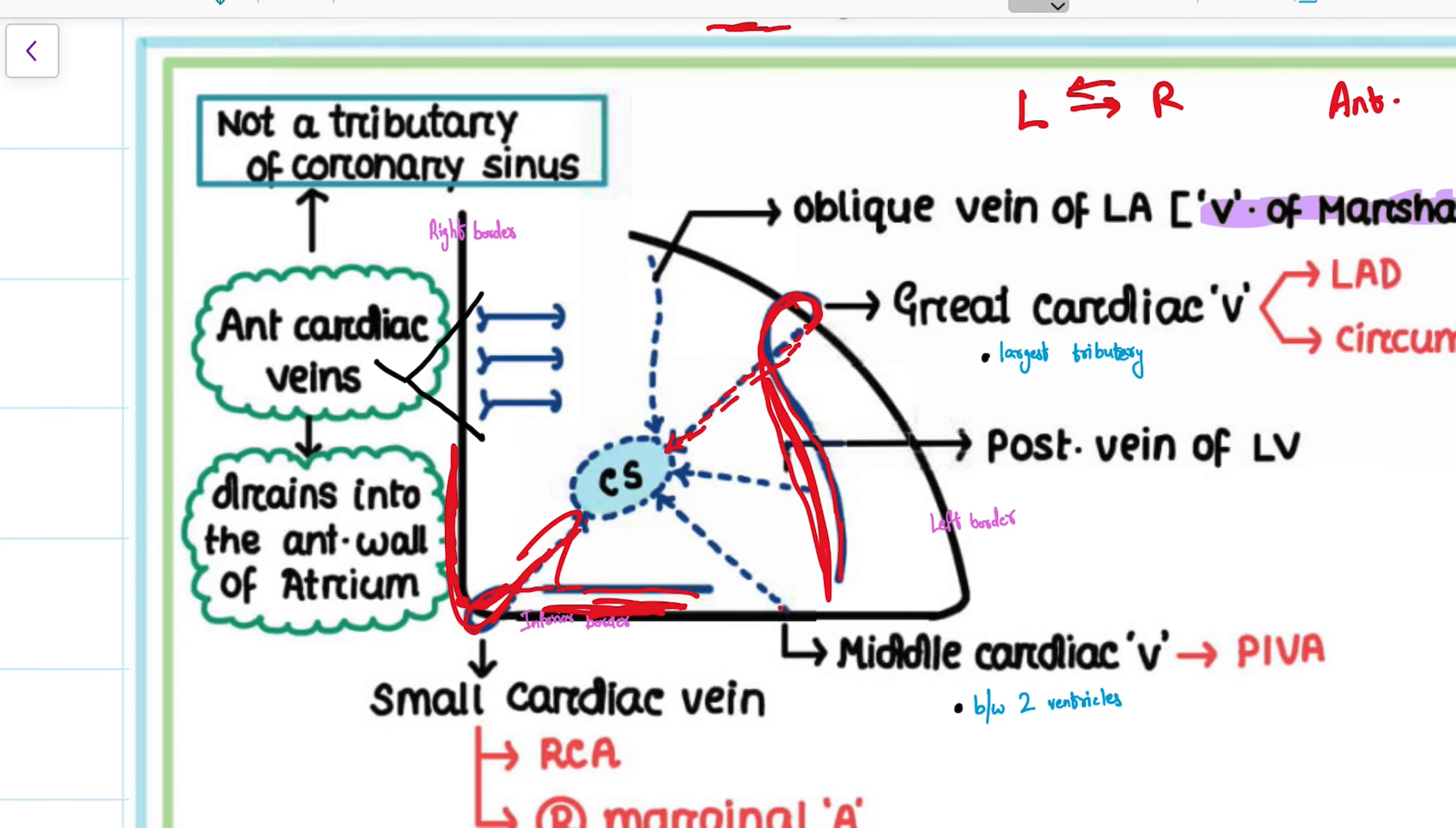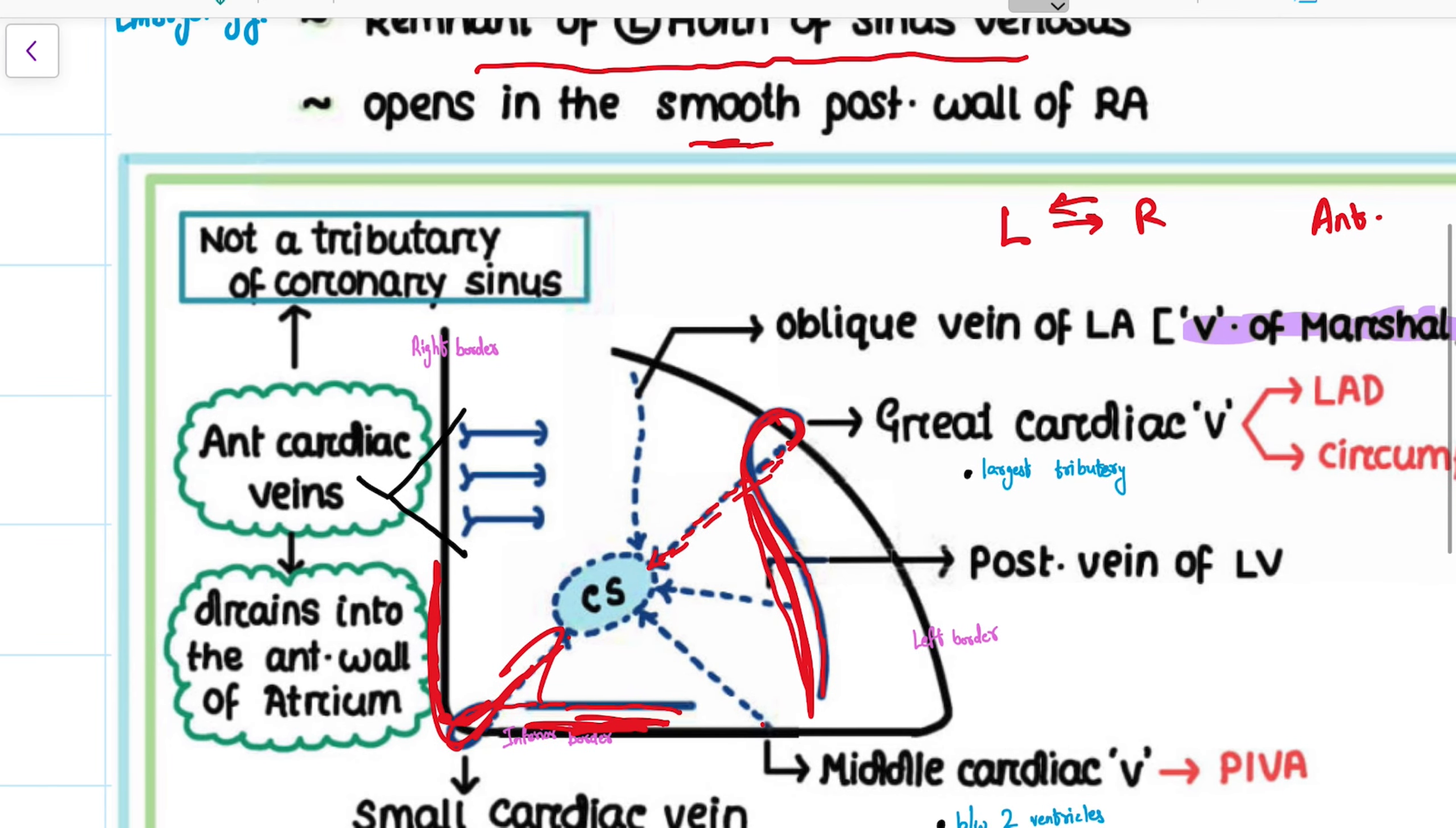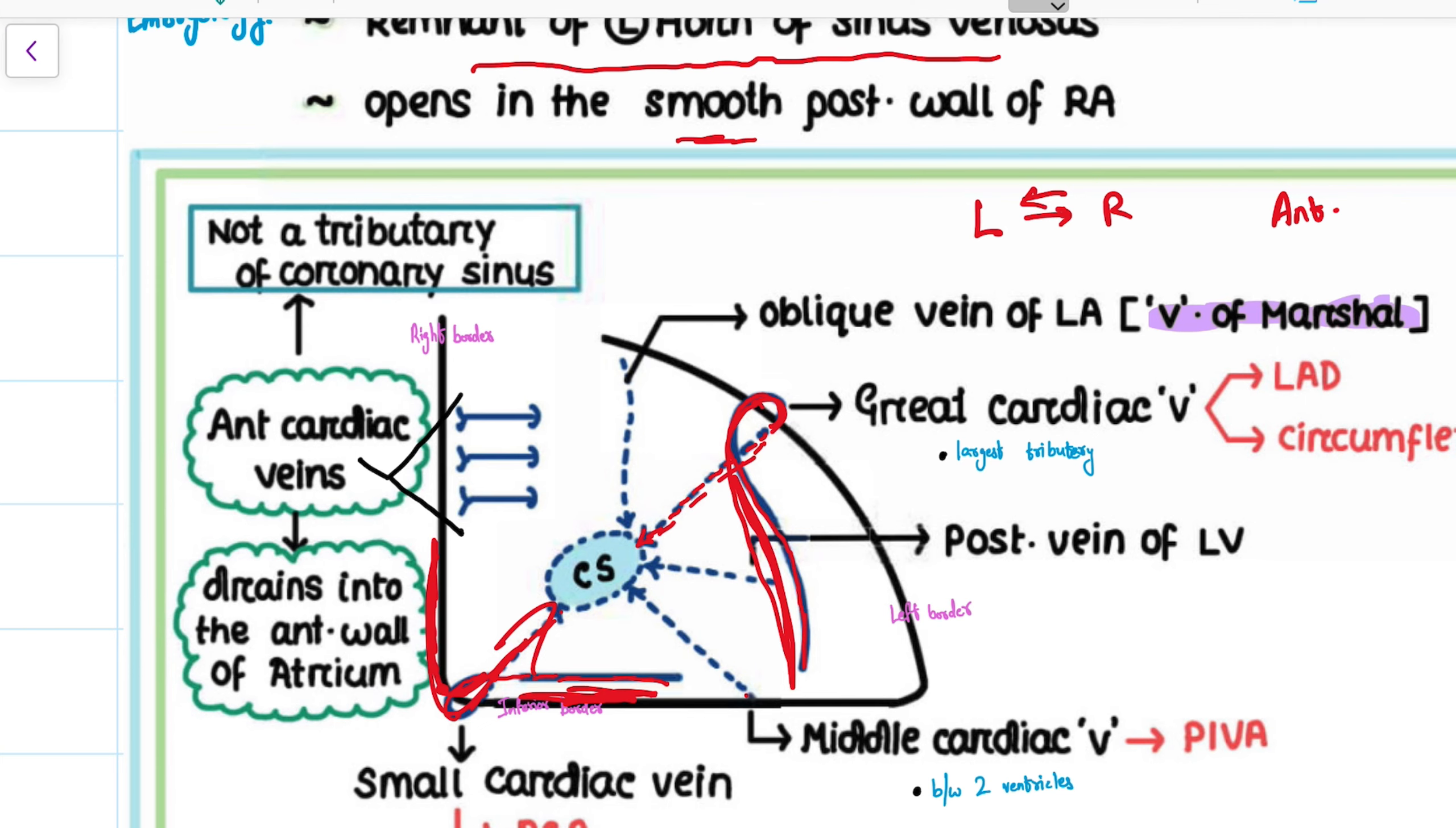Okay, these are all fine. Now let's see the exceptions. We see that all these veins are draining into the coronary sinus, right?